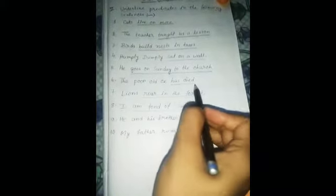Number 6. The poor old ox is the subject. Has died is the predicate. So, underline the predicate.